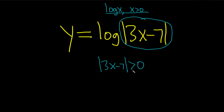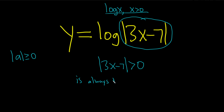Now we have to think about when this is true. It has an absolute value. You might say, isn't absolute value always positive? Not quite. If you have the absolute value of a, it's greater than or equal to 0. So most of the time it's positive, but there could be the case when it's 0. So this is always true — unless whatever's inside is 0.